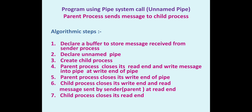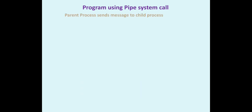Here is the algorithm: first declare a buffer to store the message received from the sender process, then declare the unnamed pipe, then create a child process. The parent process, as the writer, should close its read end as good programming practice and then write the message. The child process closes its write end as good programming practice and then reads the message from the read end.